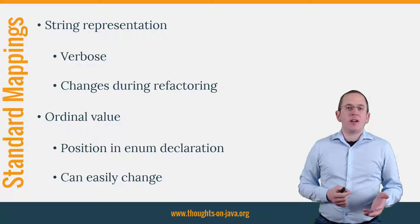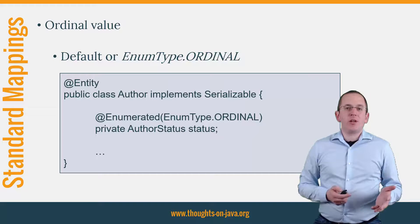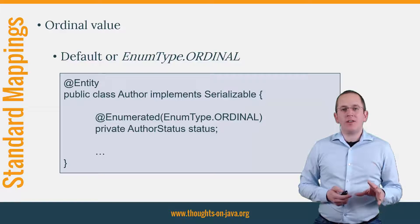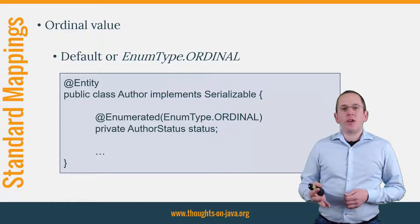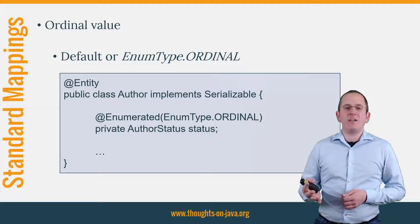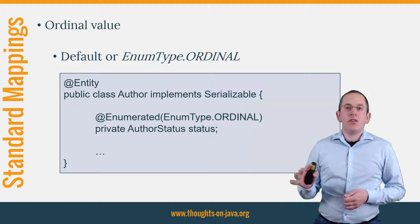You can define a custom mapping and avoid these issues with an attribute converter. When you use JPA and Hibernate's standard mapping, you can either rely on the default mapping using the ordinal or specify the mapping approach with an @Enumerated annotation, which you can see here on the slide. If you don't provide an @Enumerated annotation or don't set an enum type as its value, the ordinal of the enum value gets mapped to the database.